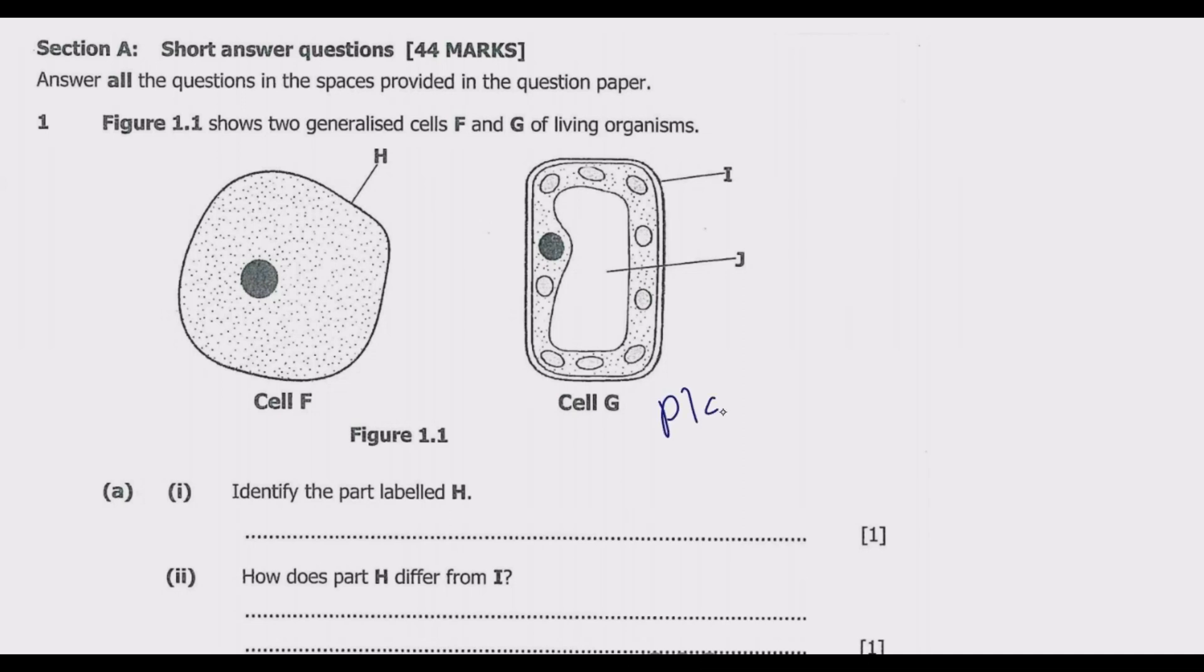This is a plant cell. Then F is an animal cell because it does not have this wall, which is the cell wall. So this is the first thing—you need to distinguish these two. Once we distinguish these two, then it becomes easier.